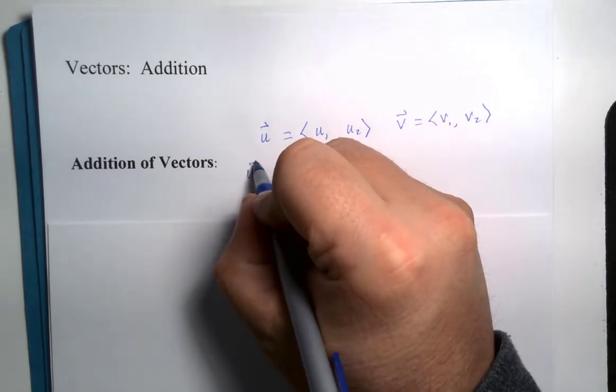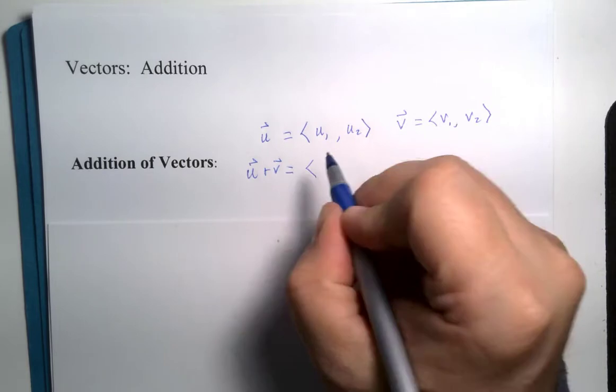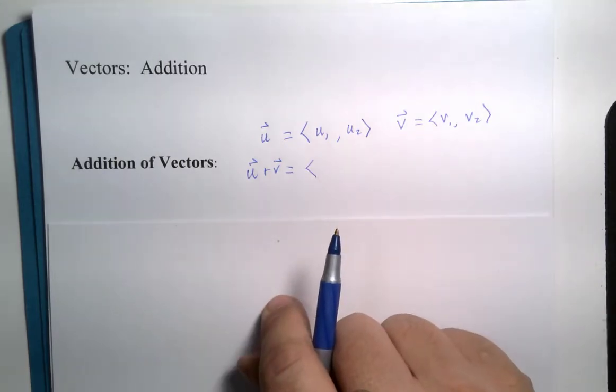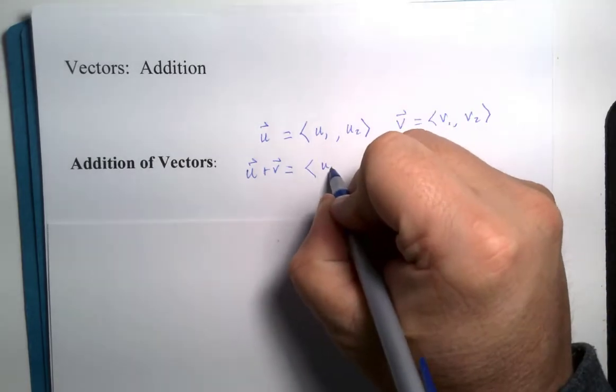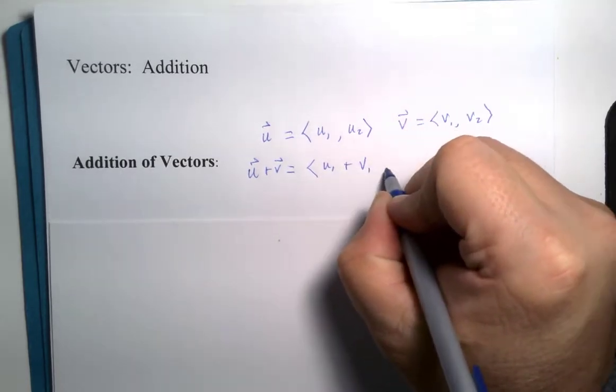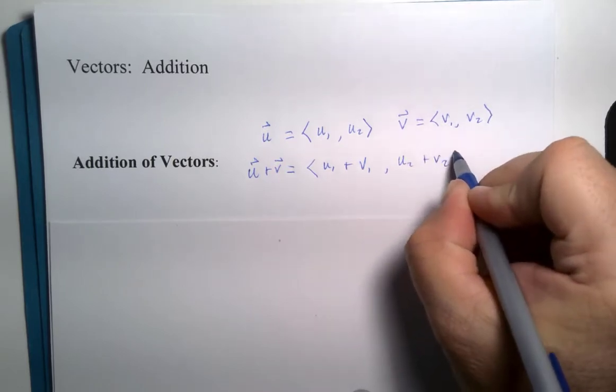The sum of the two vectors is literally just the sum of their corresponding components. So the x components, u1 and v1 would be added, and the y components, u2 and v2 would be added.